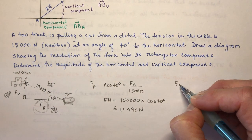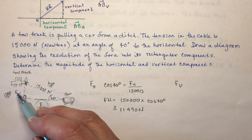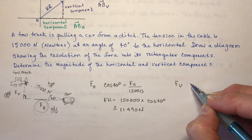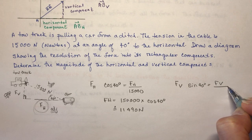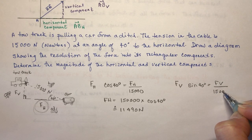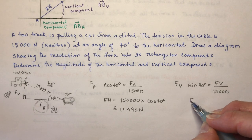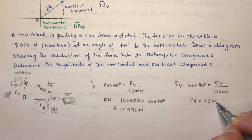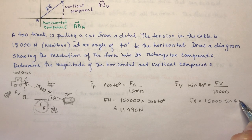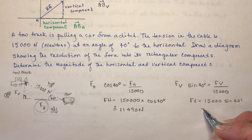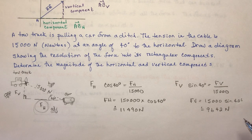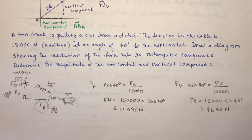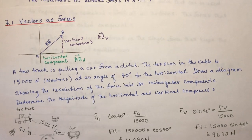That gives approximately 11,490 newtons. For the vertical force, we're dealing with the opposite side, so we use sine: sin(40°) = F_vertical / 15,000, meaning the vertical force is 15,000 × sin(40°), which is approximately 9,642 newtons. So the combined force of these two gives you the 15,000 newtons — easy.